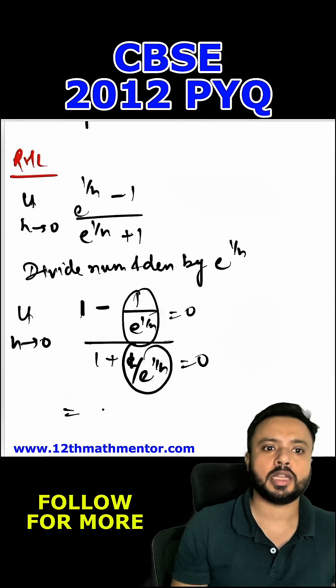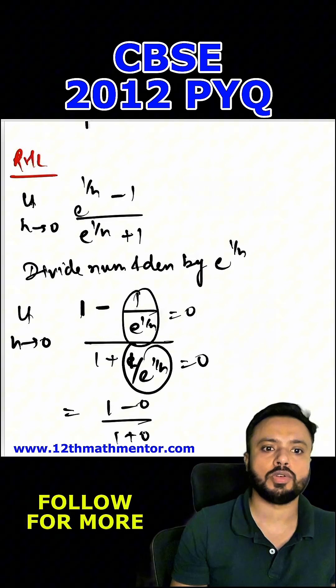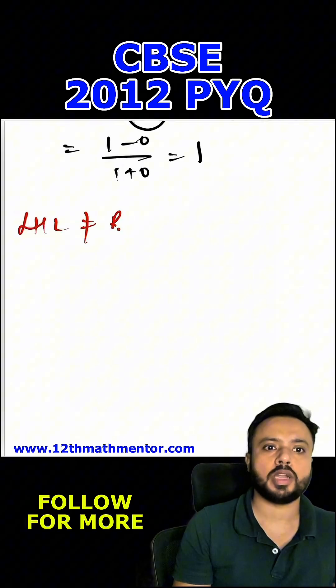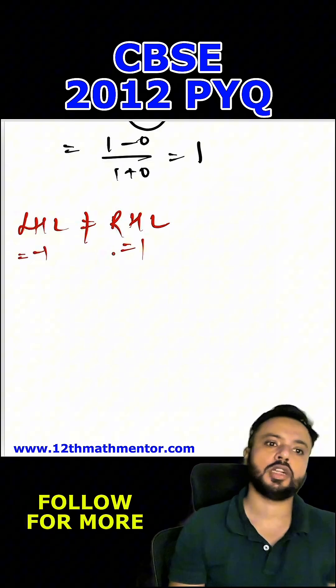RHL value would be 1 minus 0 upon 1 plus 0 which is coming out to me as positive 1. Clearly I can say LHL is not equal to RHL because LHL value is negative 1 and RHL value is positive 1. Hence f(x) is discontinuous at x equal to 0.